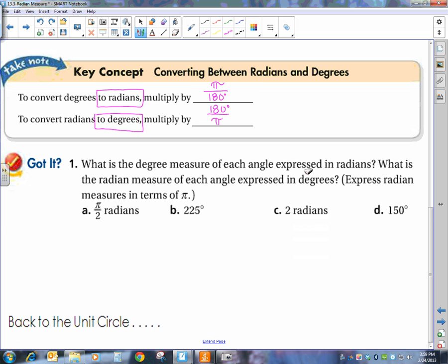Let's do a few examples. What is the degree measure of each angle expressed in radians, and what is the radian measure of each angle expressed in degrees? So if they gave it to me in radians, they want me to go to degrees. So if I'm going to degrees, I want degrees on top, radians on the bottom. Hopefully you remember from our fractions that if we have the same factor on the top and the bottom, we can cancel. 180 divided by 2 is 90 degrees. So, π over 2 radians is the same as 90 degrees.